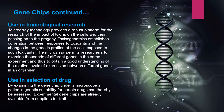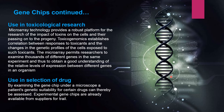Gene chips are also used in toxicological research. Microarray technology provides a robust platform for researching the impact of toxins on cells and their passing on to the progeny. Toxicogenomics establishes correlations between responses to toxicants and the changes in the genetic profile of cells exposed to such toxicants. The microarray permits researchers to examine thousands of different genes in the same experiment, obtaining a good understanding of the relative levels of expression between different genes in an organism.